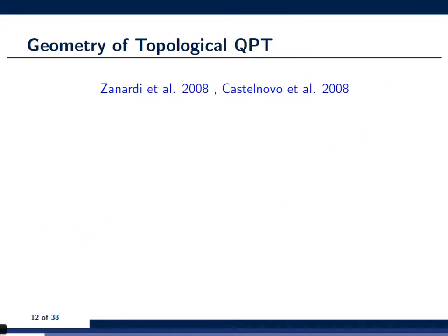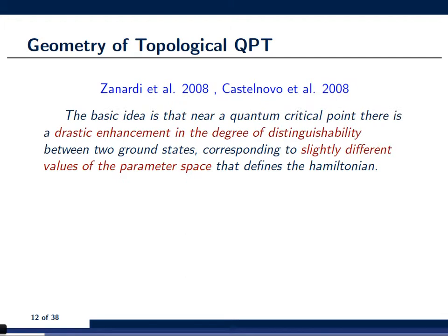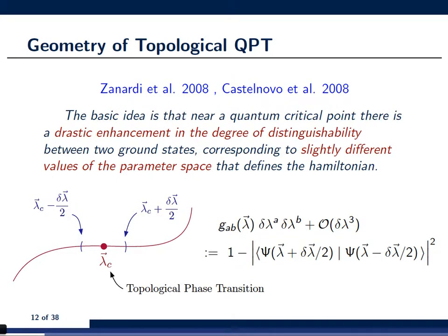Now, I would like to explain to you how the Fubini-study metric can be used to detect topological quantum phase transitions. Now, this is research done by Zanardi and Castelnovo in 2008. The basic idea behind this research is, in fact, surprisingly simple. It's that you consider a point in parameter space of your Hamiltonian where you know that a topological phase transition is taking place. And I denote this point in this case by a vector lambda_c.